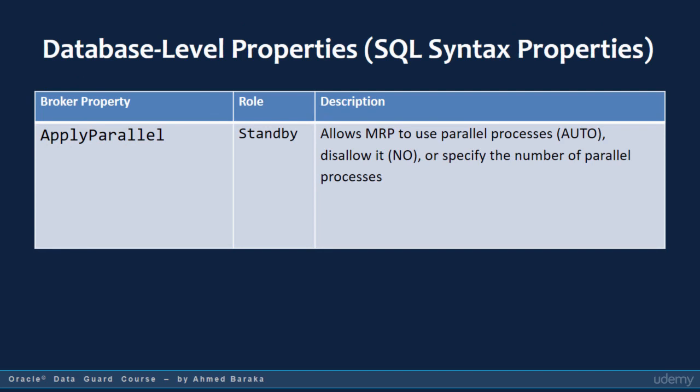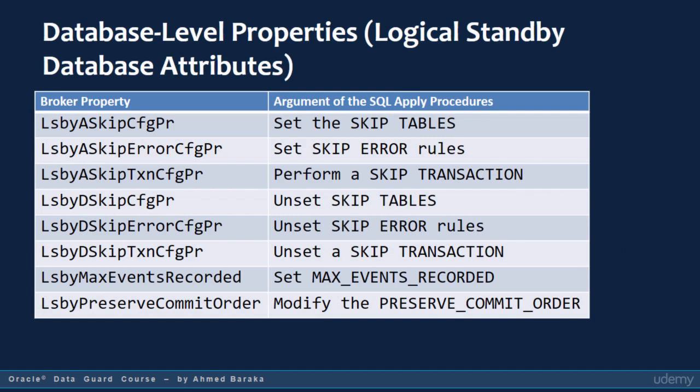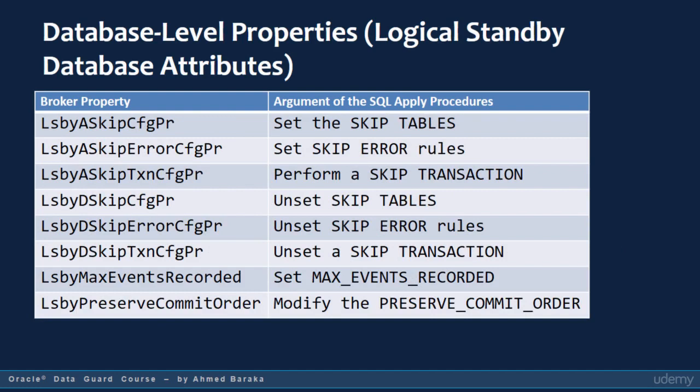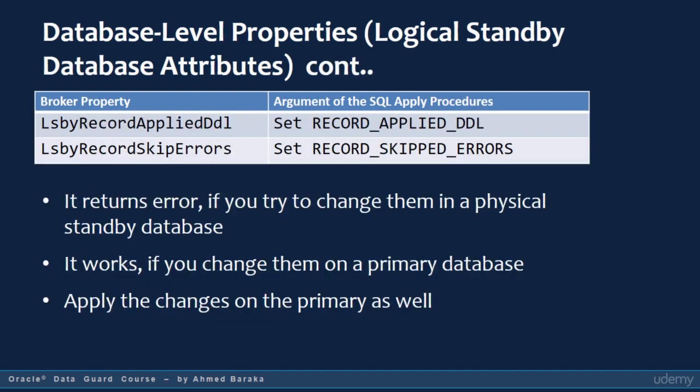Under the SQL syntax properties category, we actually have only one property: apply parallel. This property controls whether redo apply should use multiple processes to apply redo data to the physical standby database. The tables shown in the following slides list broker properties used to control a logical standby database configuration. You will learn in a separate lecture how those properties can be used to modify the way a logical standby database operates.